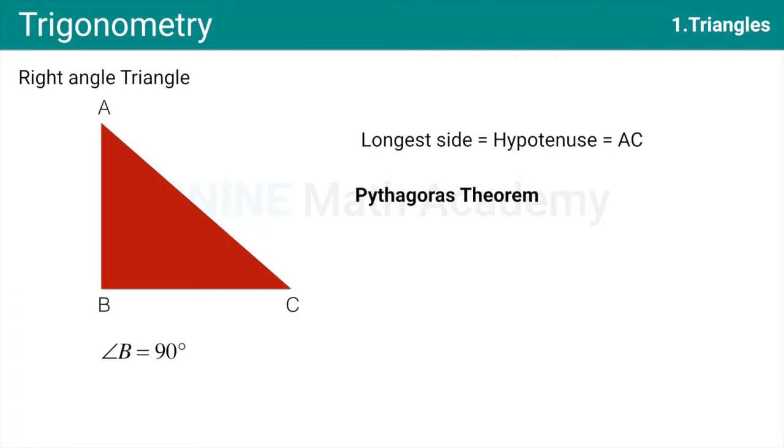We use Pythagoras theorem to find the length of this longest side. Pythagoras theorem states that square of Hypotenuse is equal to sum of squares of the other two sides. That is, AC square is equal to AB square plus BC square. Always remember, the longest side is the side that is opposite to the 90 degree angle. If we assume AB equal to 3 cm and BC equal to 4 cm, we get AC square equal to 3 square plus 4 square which is equal to 25 and hence AC will be equal to 5 cm.